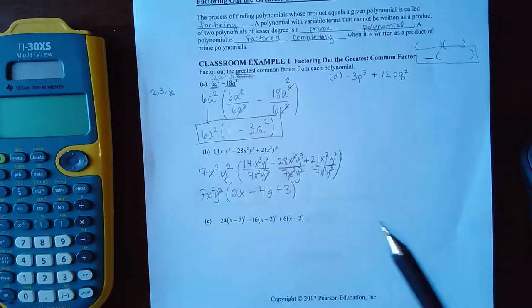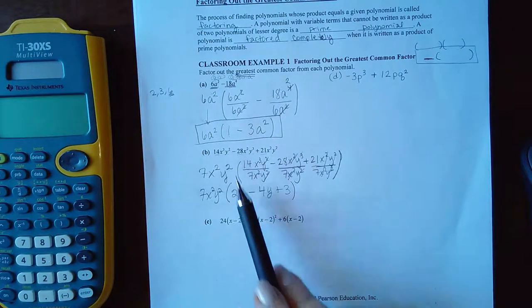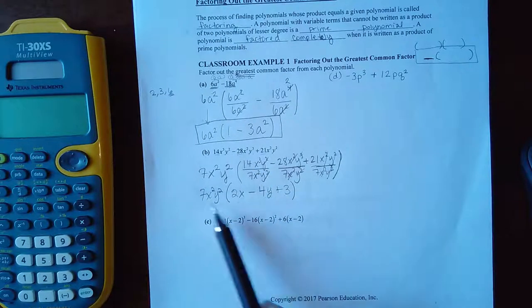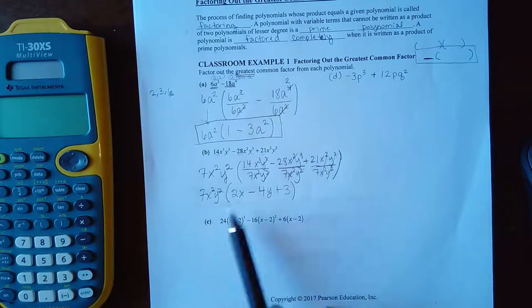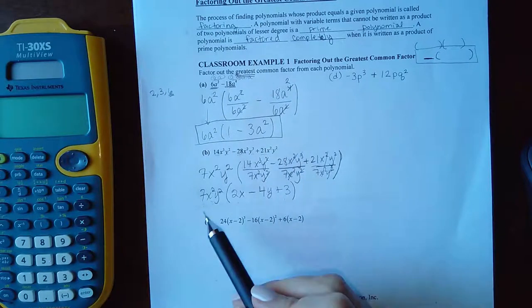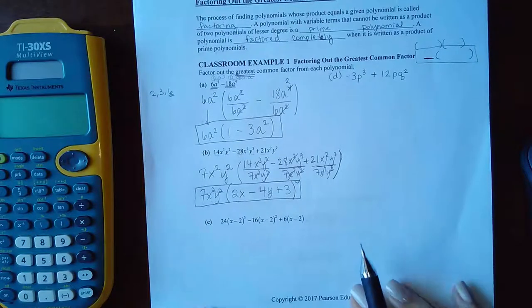And again, you can check your answers. If you multiply these together, you will get 14, you'll get an X cubed and that Y squared. If you multiply these you would get 21, the X squared and the Y squared. So this does check out. And that is the final answer there.